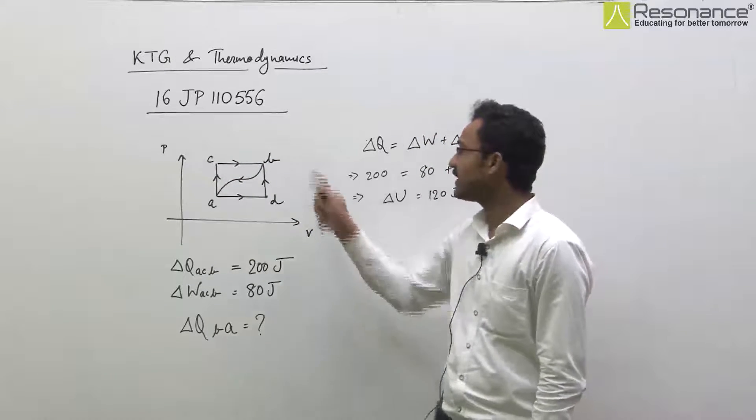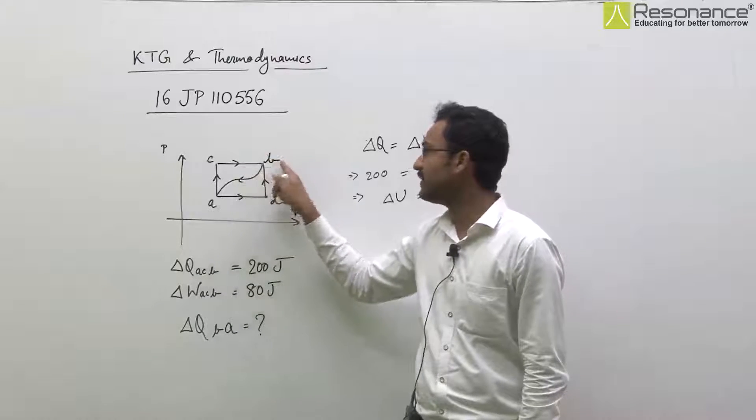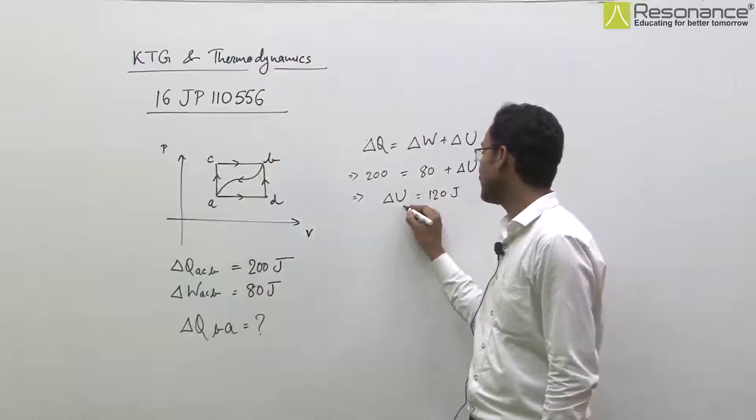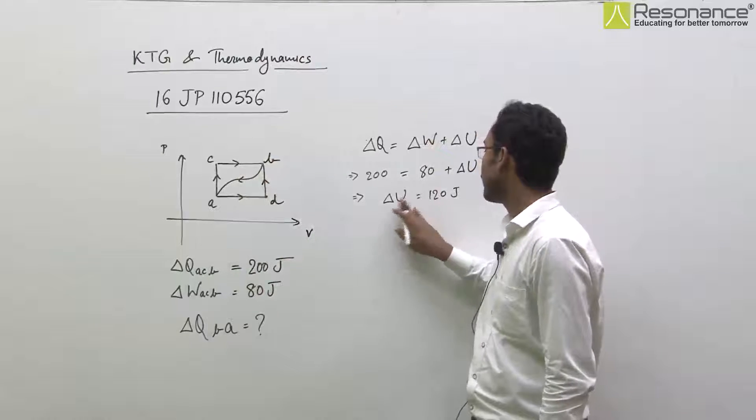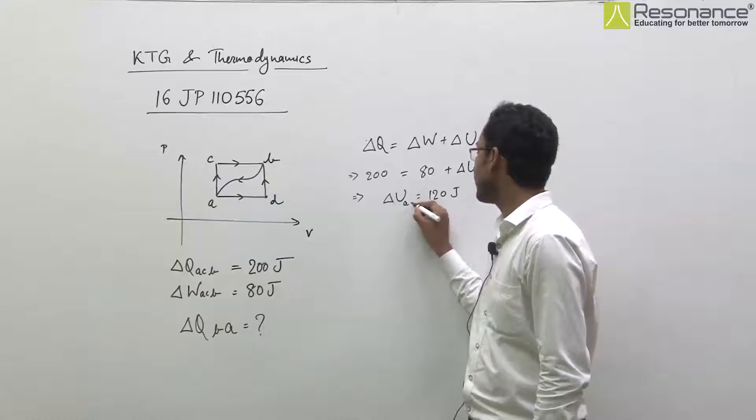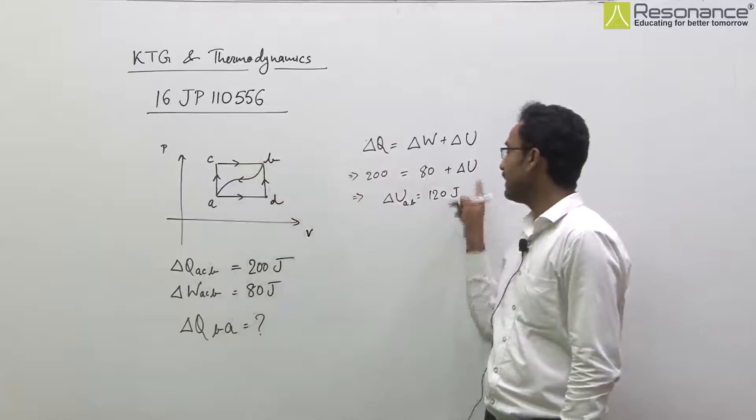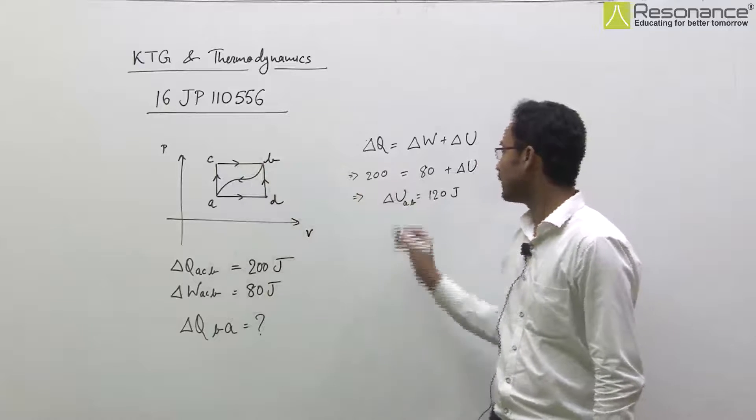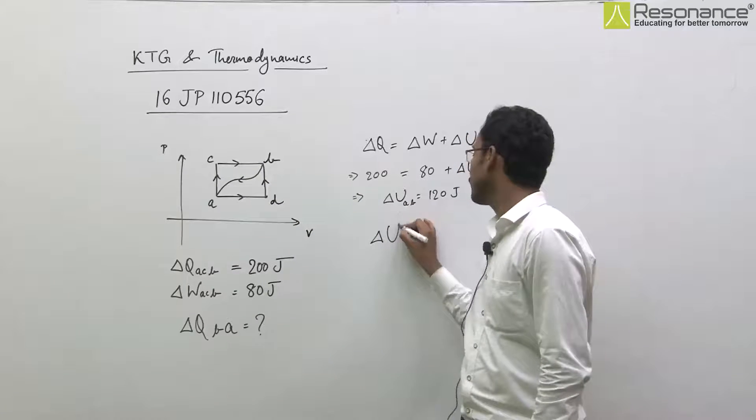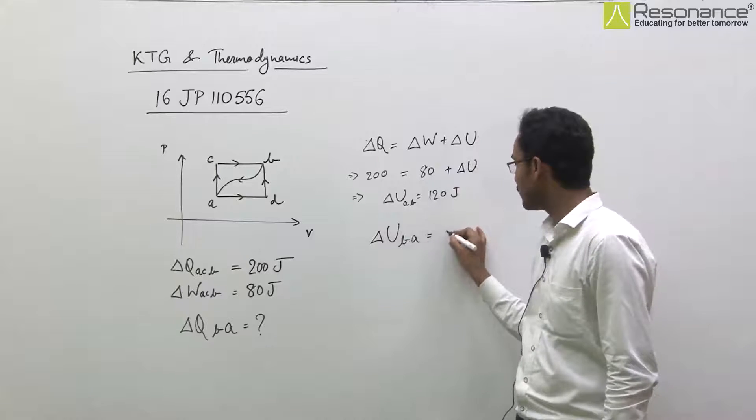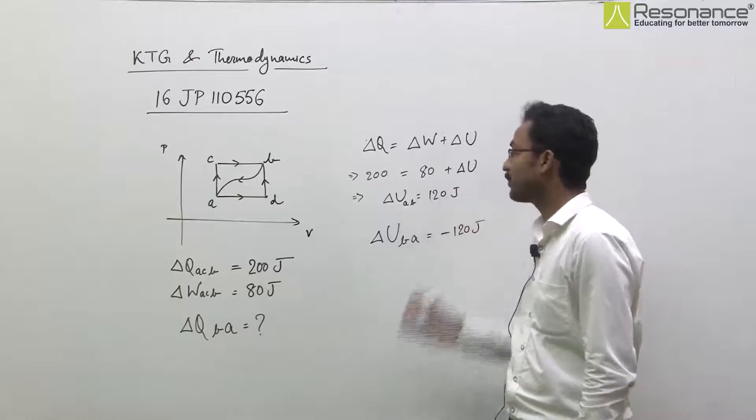Ya reverse mein kah len ki agar gas ko wapas B se A par le jaya jaye, toh change in internal energy minus 120 joule hogi. A to B se, B to A mein internal energy mein change minus 120 joule hoga.